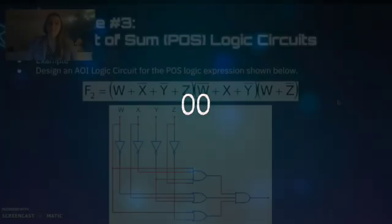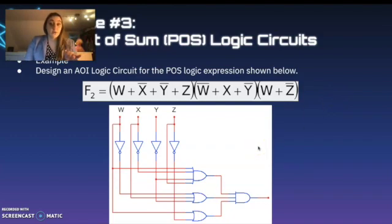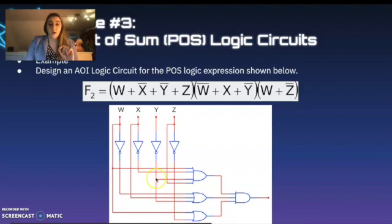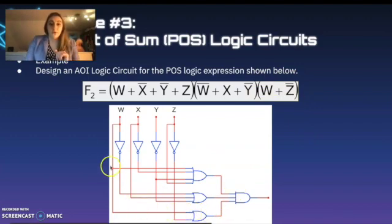Here's what we're looking at without any limits on the inputs of our gates. Our first max term is W or X-naught or Y-naught or Z, so we take a four-input OR gate and connect it to W, X-naught, Y-naught, and Z. We then have a three-input OR gate connecting to W-naught, X, and Y-naught. Our last max term has two inputs — W and Z-naught — so a two-input OR gate. All three OR gate outputs then go into a three-input AND gate as our final output.